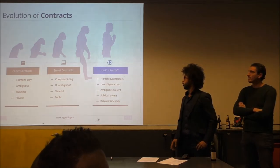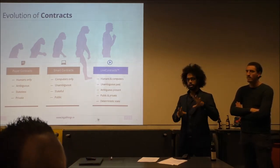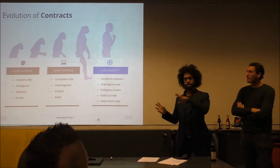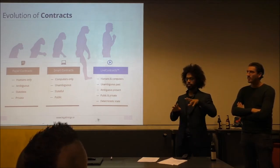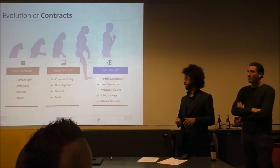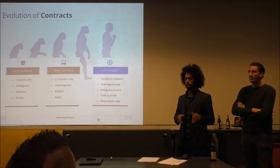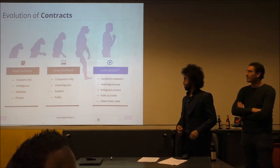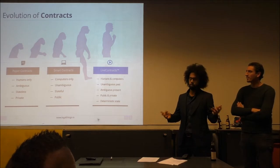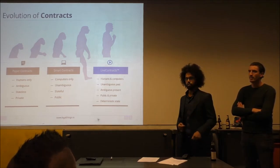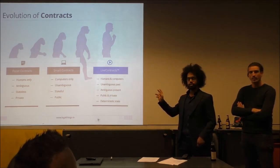We came up with something new called live contracts. A live contract is both interpretable by a human and by a computer. We store events on the blockchain so you get an unambiguous past. Those events cannot be mutated later. However, they can be disputed — you can say the event was put on the blockchain, but I think that's false. They can be both public or made private through public-private encryption. And they have a deterministic state.